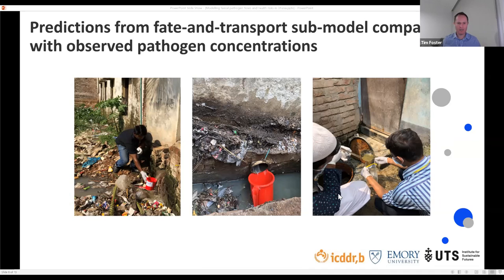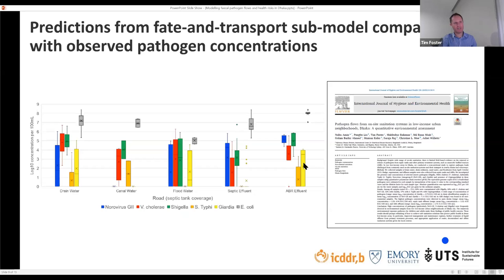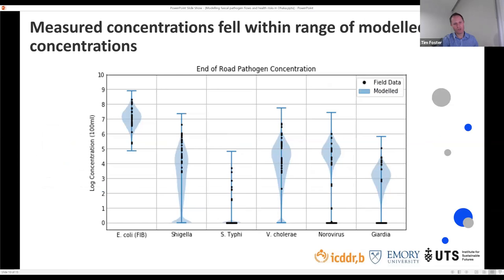This graph shows the modeled distributions of pathogen concentrations in the drains as violin plots in light blue, alongside measured concentrations shown as black dots. There is a pretty good alignment between what was observed in the field and what the model predicted, based on a thousand Monte Carlo simulations.